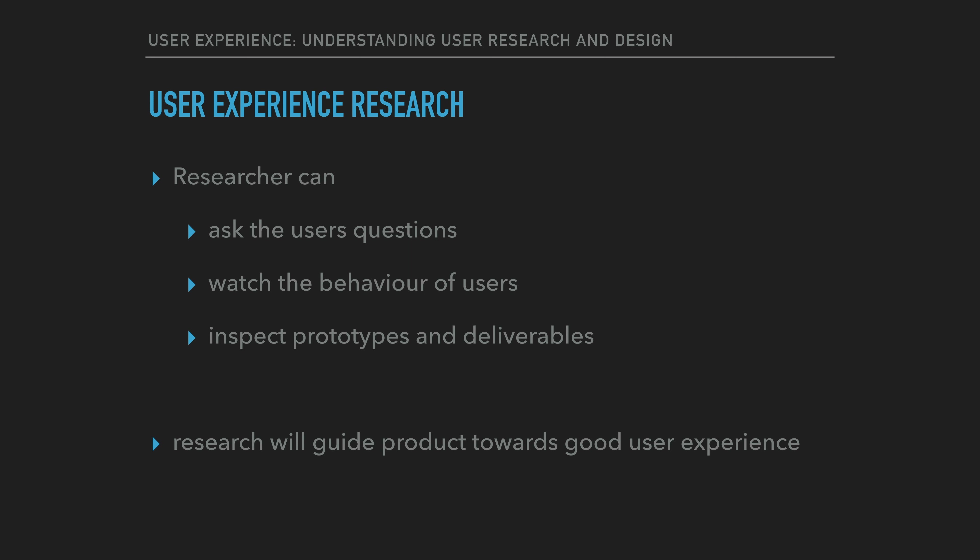Third, the researcher can inspect prototypes and other deliverables. The researcher can compare the system to guidelines and principles in an attempt to find out what rules are violated and where the system is likely to fail. The researcher can also compare the systems to other systems in an attempt to figure out the strengths and weaknesses of the design.